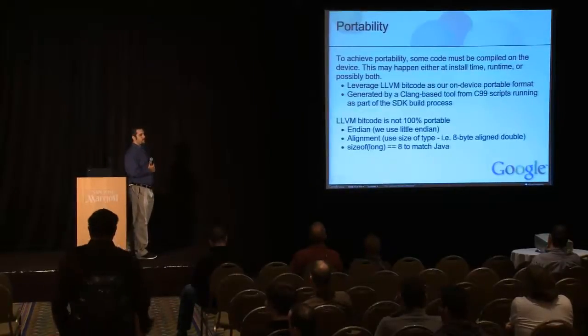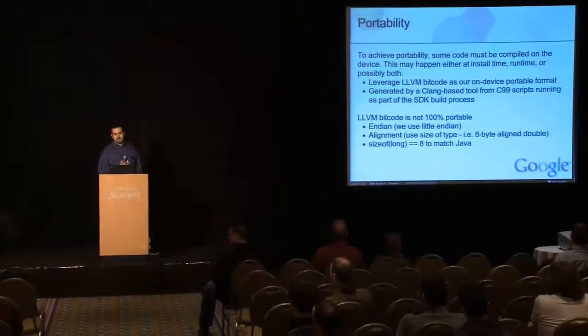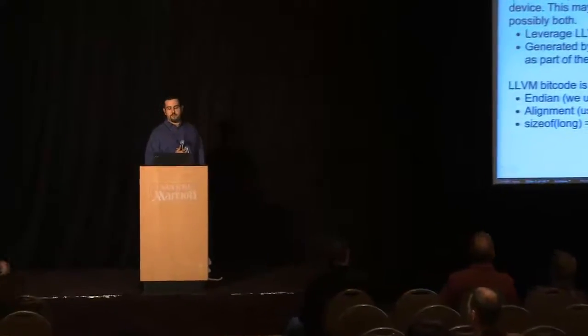We use a Clang-based tool — we basically layer our own front-end on top of Clang that compiles a C99-like language with a few extensions. We have a few restrictions as well for things that don't make sense since we're not compiling a main function. This is all done as part of the Android SDK and has been shipping since Honeycomb, although the source is now available. The challenge is that LLVM BitCode is not 100% portable, so we had to make our own restrictions.